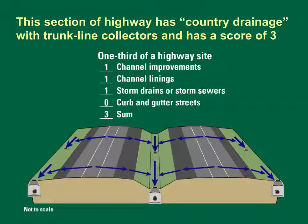This section of highway has country drainage with trunk line collectors. Runoff flows off the pavement into grassy swales in the median and on the shoulders, and the concentrated swale flows drain to trunk line collector sewers. These swales are identified as having channel improvements, and the trunk line sewers represent main channels with improvements and channel linings. These trunk line collectors are storm sewers that drain more than 50% of this section. Therefore, the channel improvement score is one, the channel lining score is one, and the storm sewer score is one. The curb and gutter street score is zero because drainage flows directly over the median and shoulders to the swale drainage system. This section has a total score of three; three such sections produce a BDF of nine.